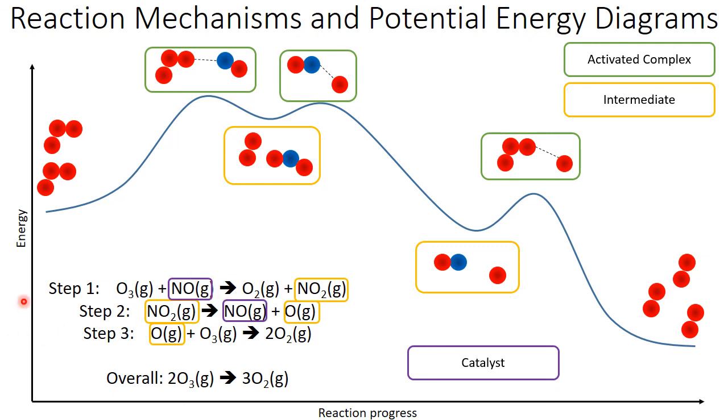So there you go. Whenever you're looking at a reaction mechanism or a potential energy diagram, you can tell a lot about what the other one ought to look like. So remember that a potential energy diagram needs to have a transition state for every single elementary step. And we can even figure out which of these might be our rate-determining step. But that's a topic for another video.